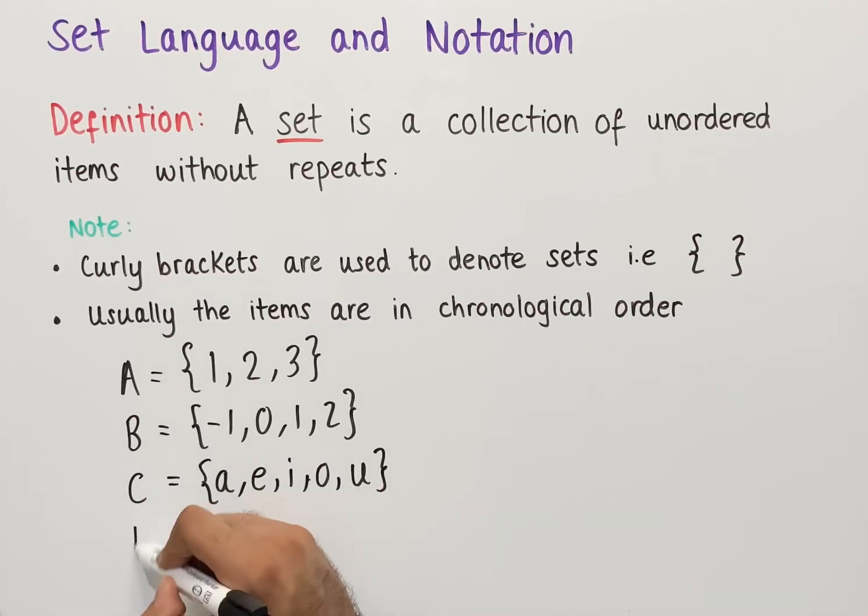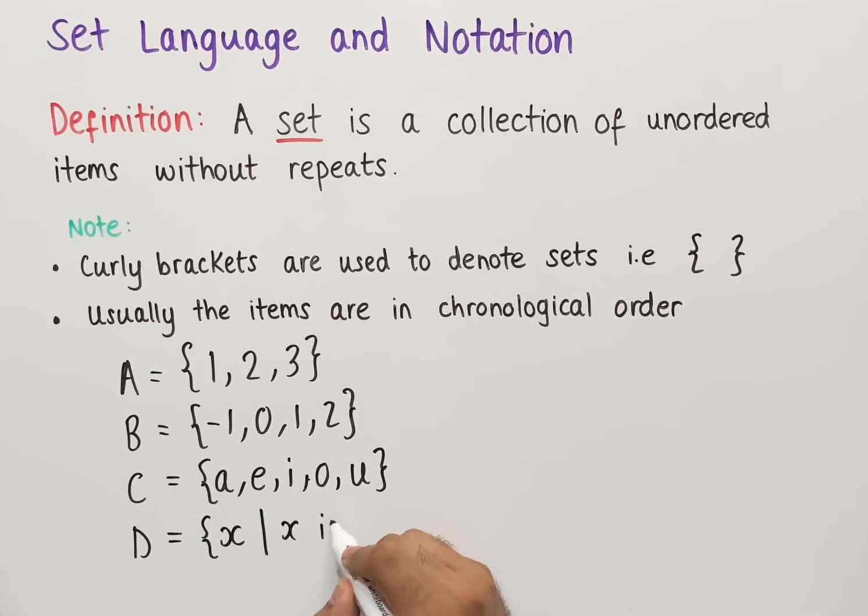Sometimes we might also see sets that use the following notation: we have the brackets for our set and then we have X, which is some number such that—this could be using a straight line or colon—X such that X is even.